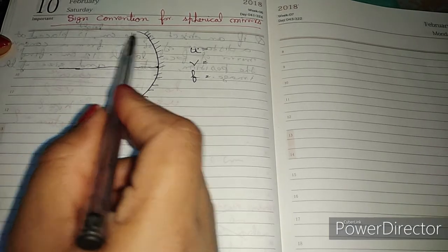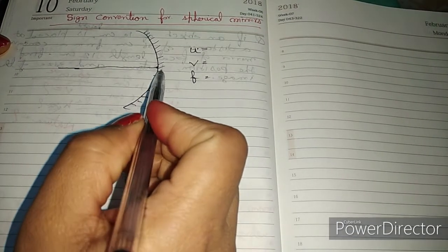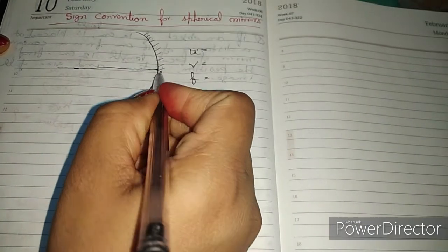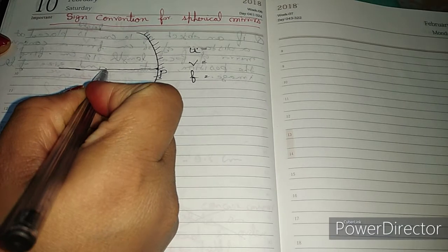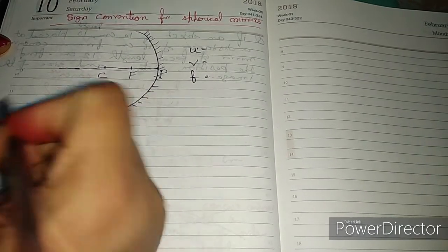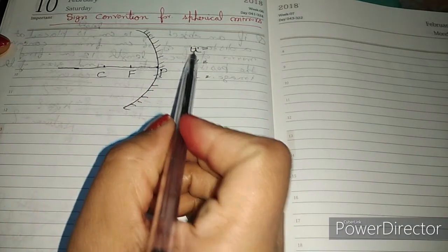We are seeing that the diagram is the concave mirror. The midpoint is called pole. The point is called C and the point is called F. So first of all, we know that U, V, F.